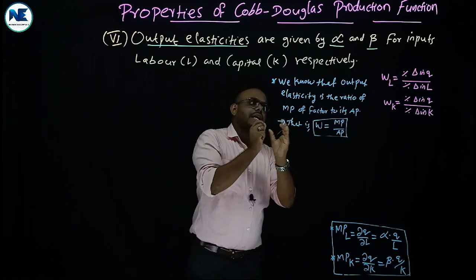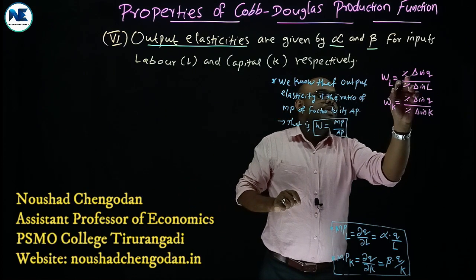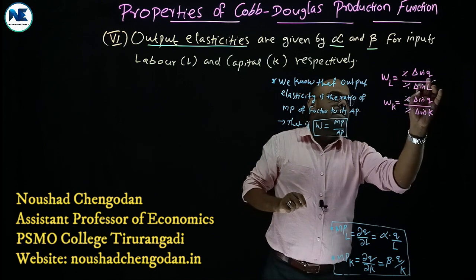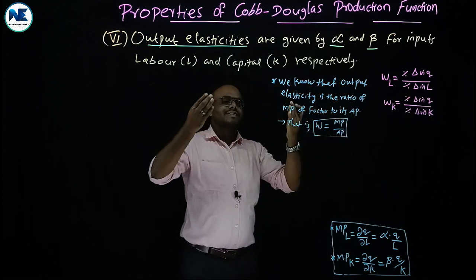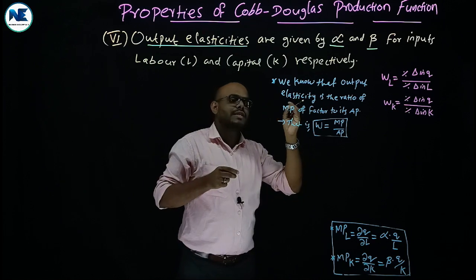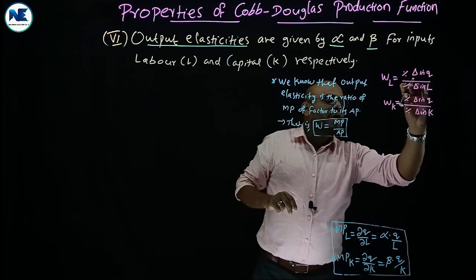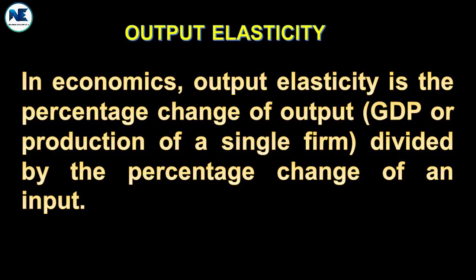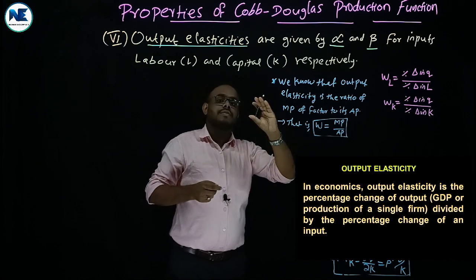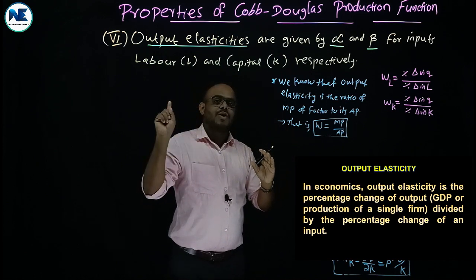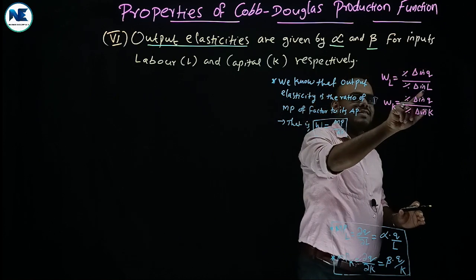Output elasticity with respect to labor is equal to the percentage change in total output divided by percentage change in labor — similar to price elasticity of demand, which is percentage change in quantity demanded divided by percentage change in price. Here, we analyze percentage change in quantity on account of percentage change in labor. For capital, we measure the change in total output by keeping labor constant.